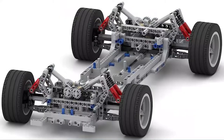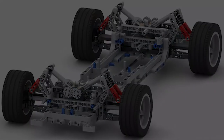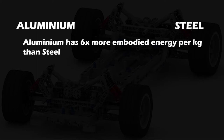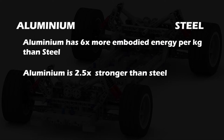Suppose I want to make a car and I came across two types of material — first aluminum and second steel. Aluminum has six times more embodied energy per kg than steel, which means it is six times bad, right? Not necessarily, because aluminum is 2.5 times stronger than steel, which means I can make a lighter chassis with aluminum, and creating a lighter weight car can save far more energy than reducing the embodied energy of its material.